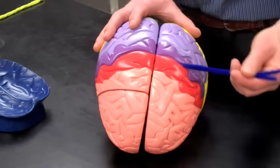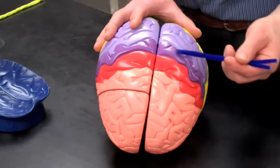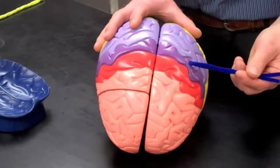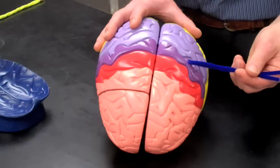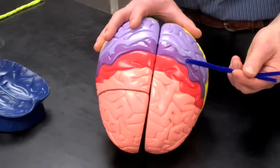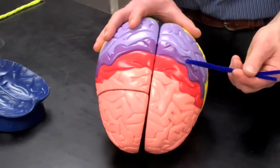Then when we go behind the central sulcus, we have the purplish, darker purplish stained gyrus and that's the postcentral gyrus and that's the primary sensory cortex. That is where we feel touch, where we can locate where touch is coming from or temperature or pressure.